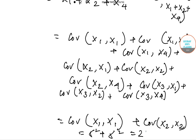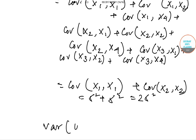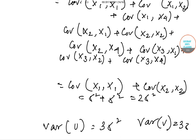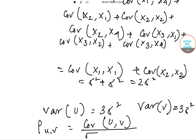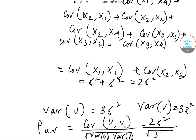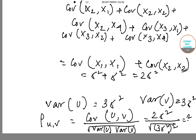This gives us sigma square plus sigma square equals 2 sigma square. Variance of u equals 3 sigma square and variance of v also equals 3 sigma square. Now, rho of u and v equals covariance of u,v divided by the square root of variance of u multiplied by variance of v. This gives us 2 sigma square divided by root over (3 sigma square squared), which reduces to 2 by 3.